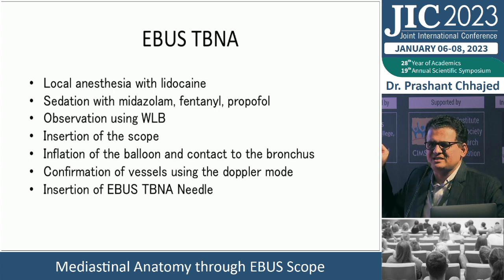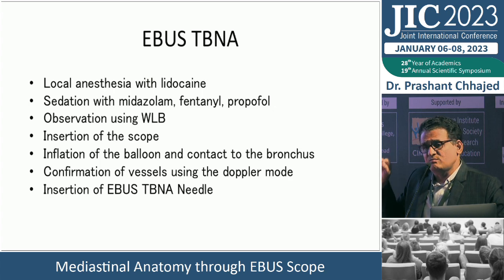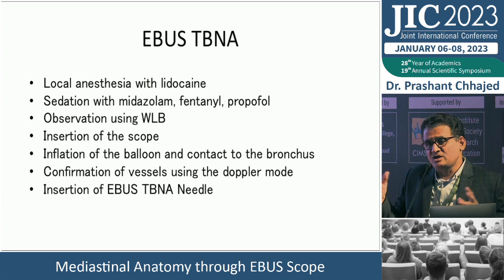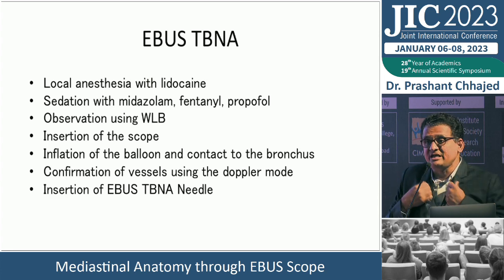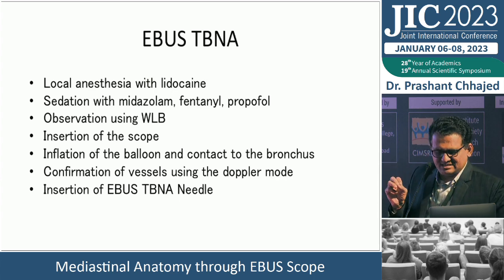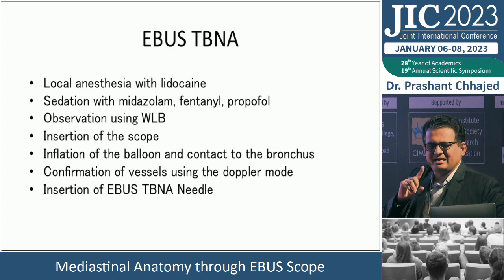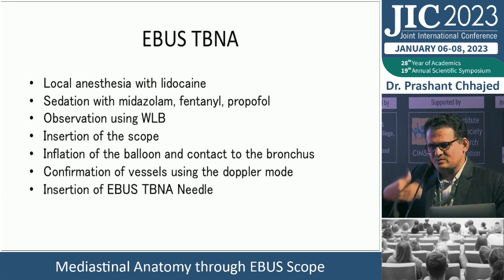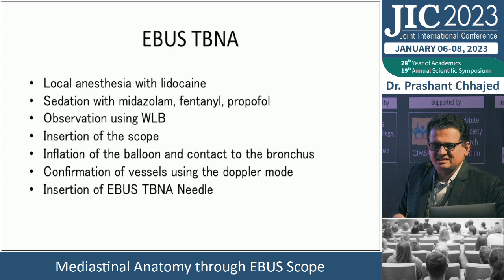These procedural steps have not changed in 20 years. You must perform white light bronchoscopy before EBUS. Some newer scopes with 10-degree views allow adequate airway assessment without a separate bronchoscope. White light bronchoscopy is a two-minute job and a good learning opportunity for trainees before the senior operator proceeds with EBUS. The steps are clear: optionally use the balloon, identify vessels, separate vessels from lymph nodes, then take the sample.